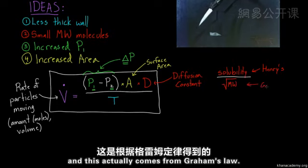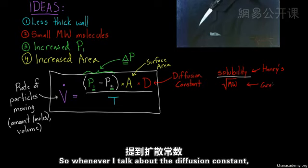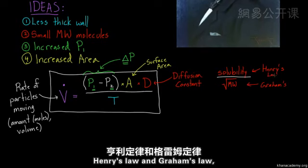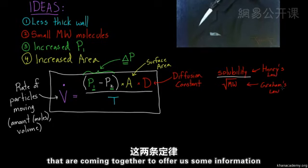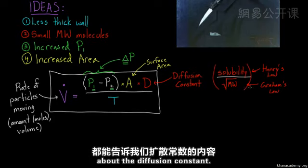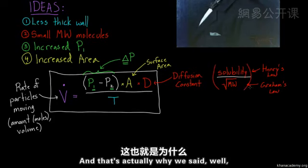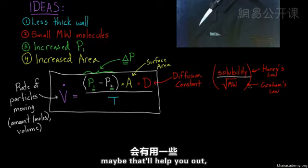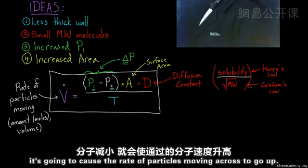And then you have to divide by the molecular weight, the square root, in fact, of the molecular weight. So that's the idea we had, and this actually comes from Graham's law. So whenever I talk about the diffusion constant, remember there are two laws that are at play here, Henry's law and Graham's law that are coming together to offer us some information about the diffusion constant. And that's actually why we said, well, if you have a small molecular weight molecule, maybe that'll help you out. Because it's in the denominator, it's going to cause the rate of particles moving across to go up.